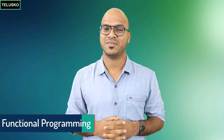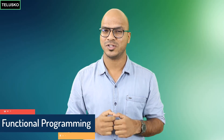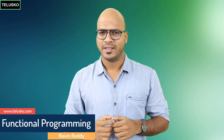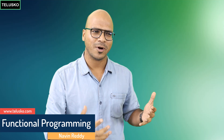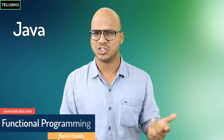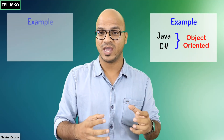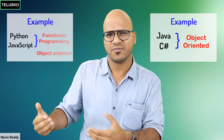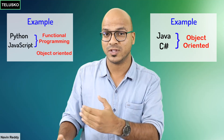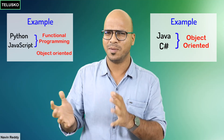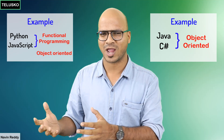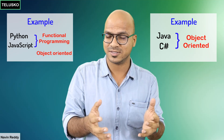Welcome back. My name is Davin Reddy and in this video we'll talk about functional programming. When you talk about programming languages like Java, C#, C, C++ — all these languages have different programming styles. Java and C# are object-oriented, while Python and JavaScript are functional programming languages that also support objects, so you can say they support both functional and object-oriented programming.